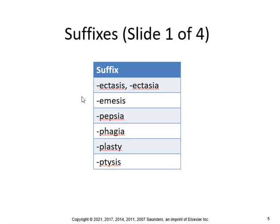Ectasis or ectesia — an example would be bronchiectasis, which is dilation of the bronchial tubes. Emesis — a perfect example would be hematemesis, meaning vomiting blood. Pepsia — for example, dyspepsia means bad digestion or indigestion. Phagia — you can have dysphagia, which is difficulty swallowing.